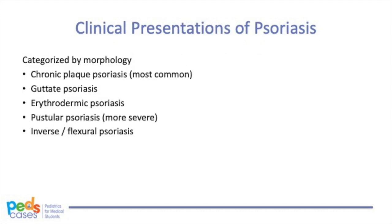There are different clinical variants of psoriasis, classified based on morphology. These include chronic plaque, guttate, erythroderma, pustular, and inverse or flexural psoriasis. Compared with adults, pediatric patients have different distributions, and they're more likely to have the face, scalp, intertriginous, and diaper areas involved.